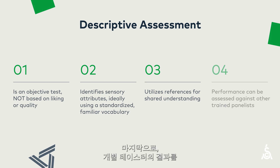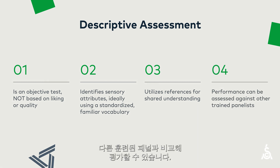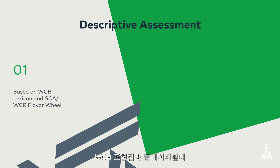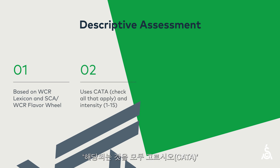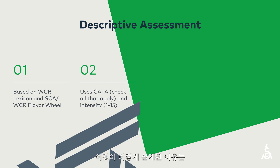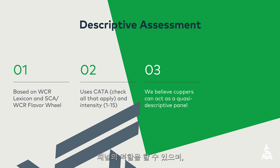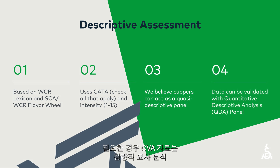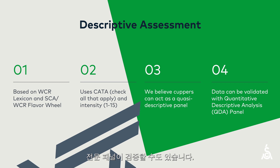Finally, an individual taster's performance can be assessed against other trained panelists. The descriptive assessment therefore uses a lexicon based on the WCR lexicon and its associated flavor wheel. It puts those descriptors into a Check All That Apply system, which is an intensity rating. We constructed it in this way because we believe that cuppers can act as a descriptive panel, and data can be used for both research and trade purposes. If necessary, CVA data can be validated with a dedicated, formal, quantitative descriptive analysis panel.